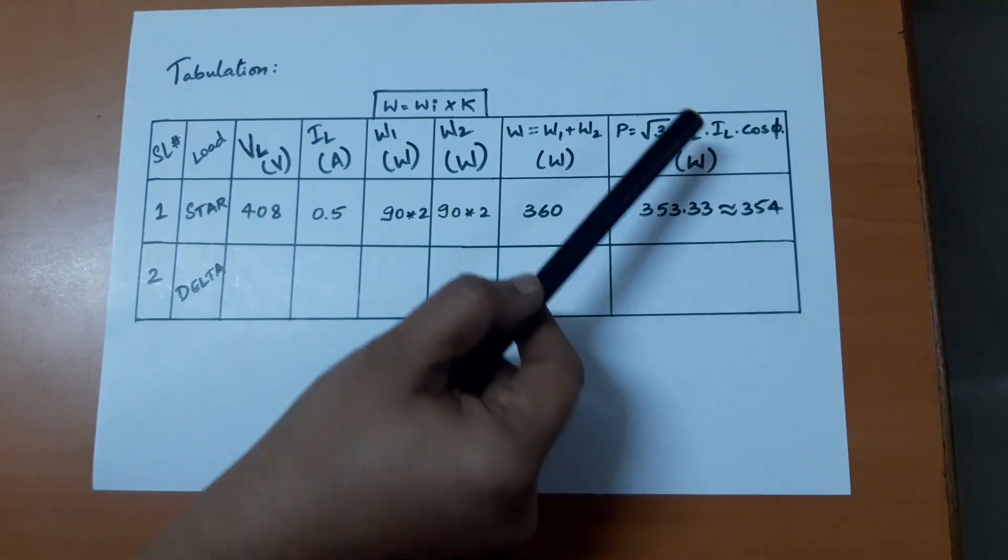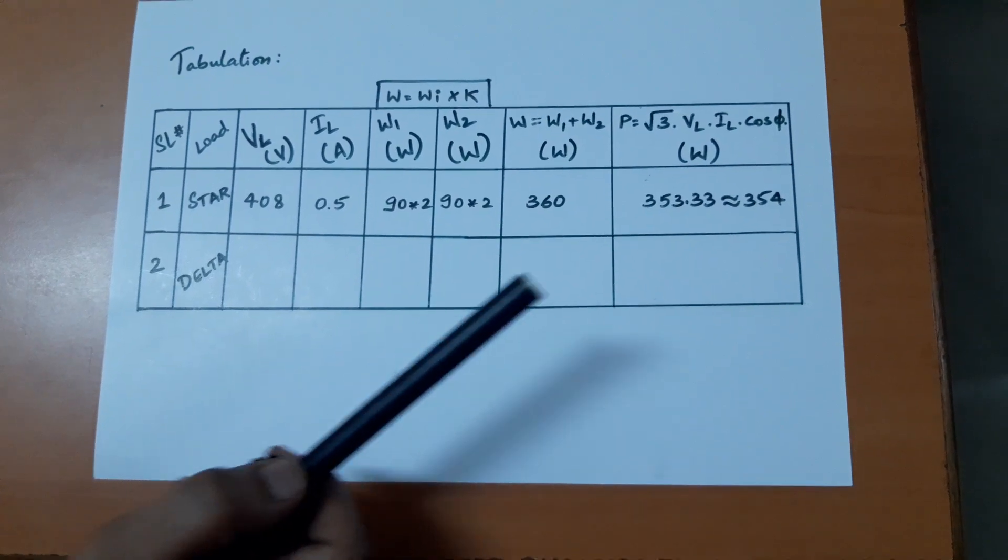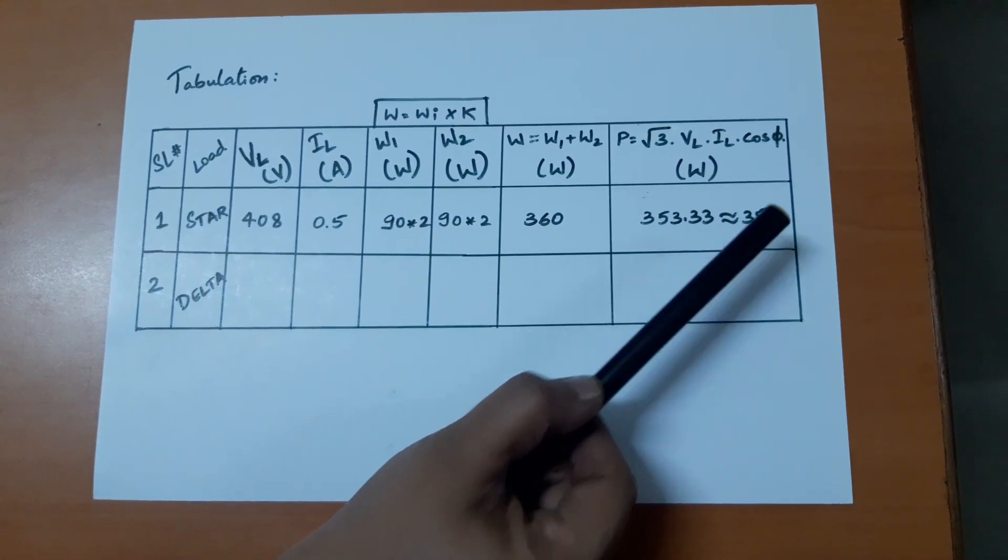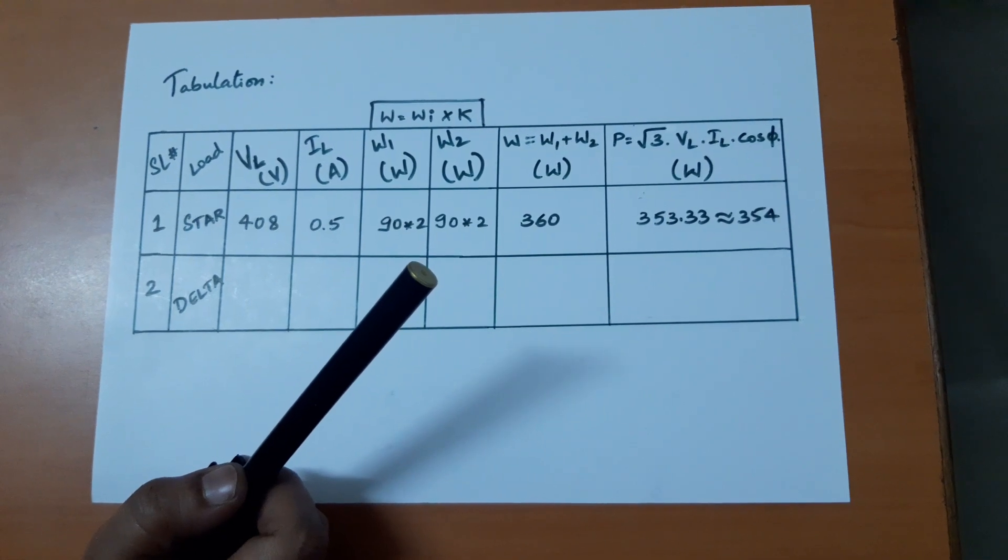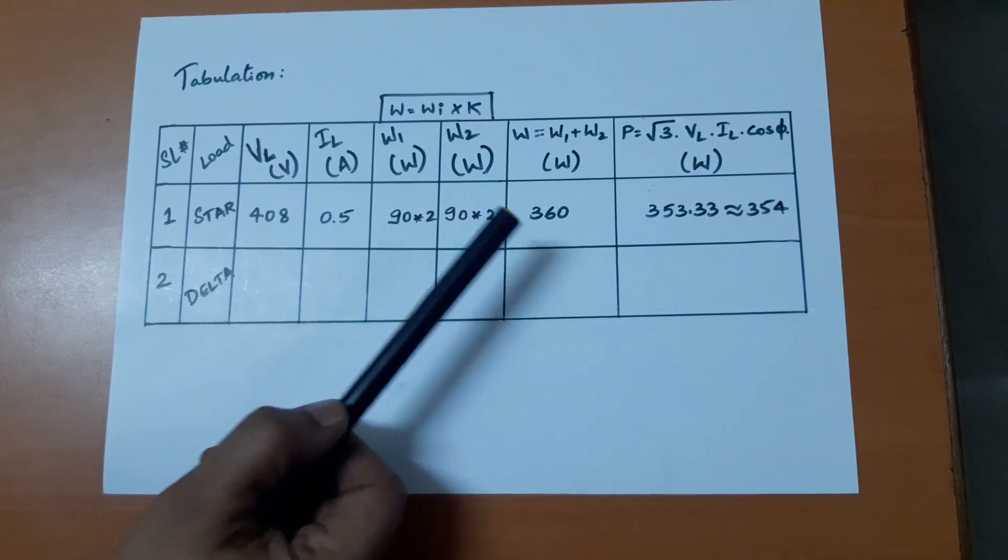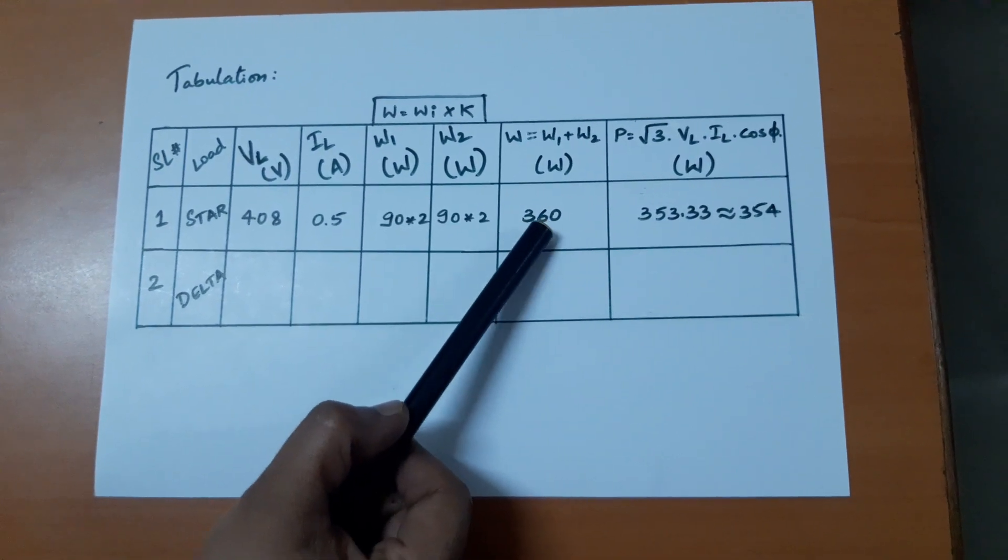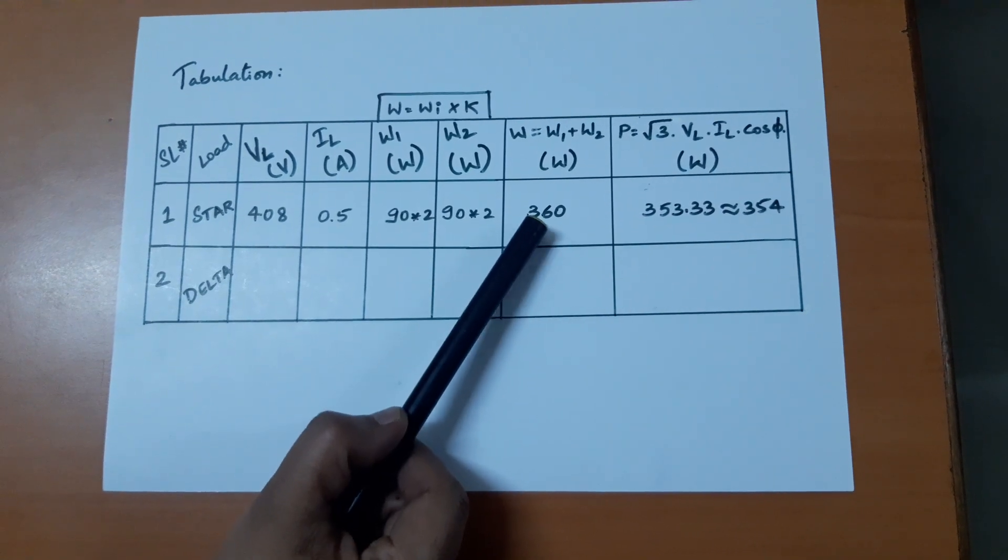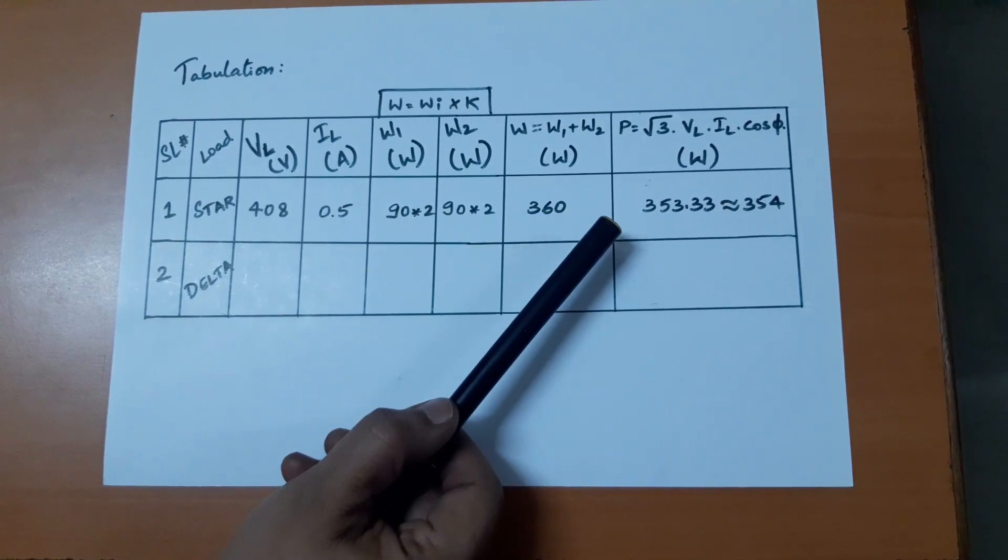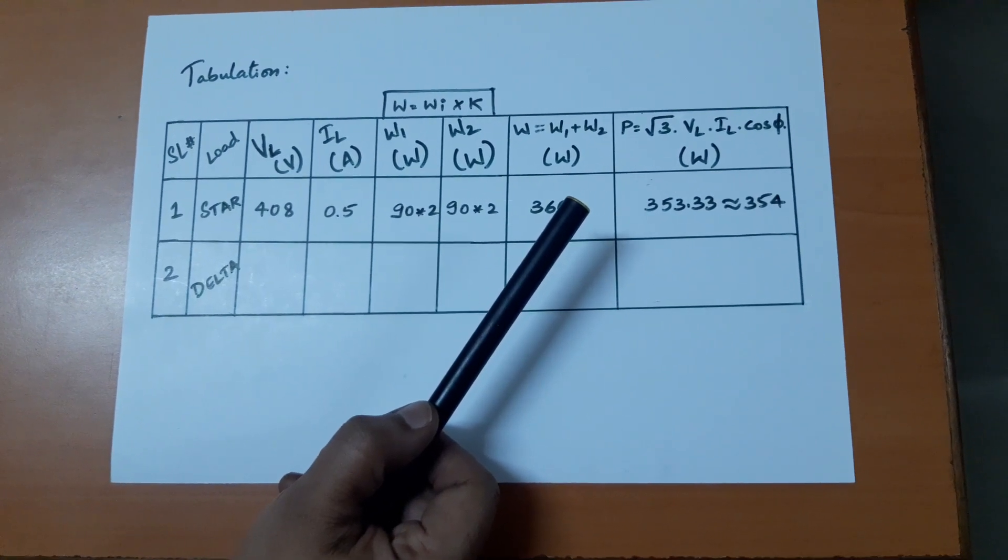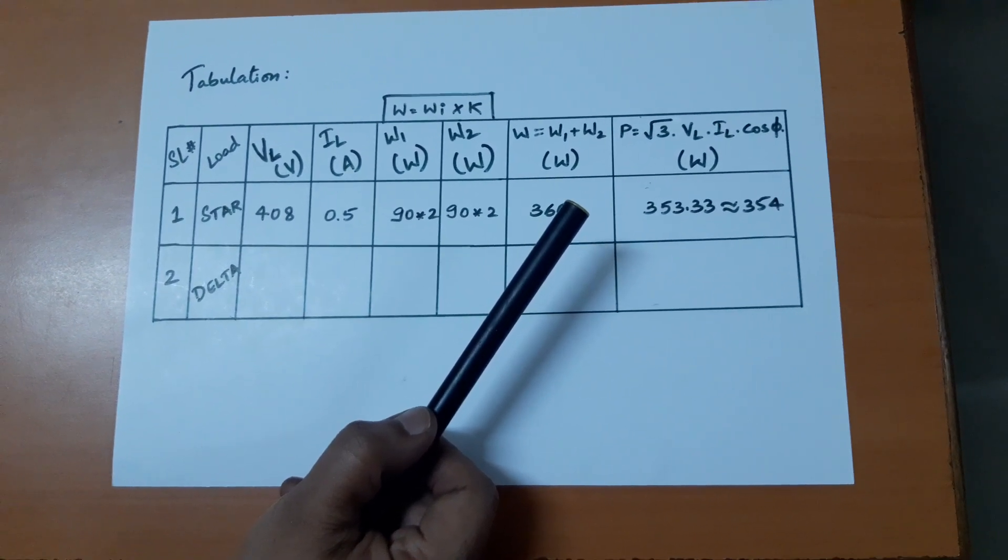Calculate the values by substituting them in this formula and you get 353.33, approximately rounded to 354. W is the product of W1 and W2, which is 360 watts. This is the theoretical value and this is the practical value. When we look at the 3 phase power, they are almost close, considering human eye errors while taking readings in an analog meter.